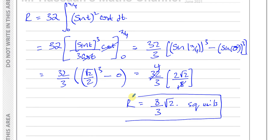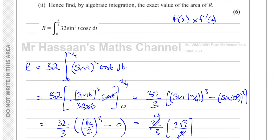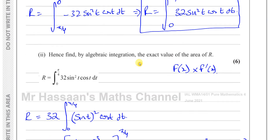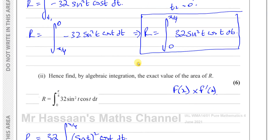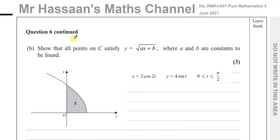So the area of R is 8 root 2 over 3 in exact form, which is what was asked. Now for question 6b: show that all points on curve C satisfy y equals the square root of (ax plus b), where a and b are constants to be found.